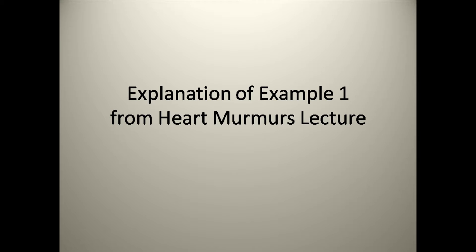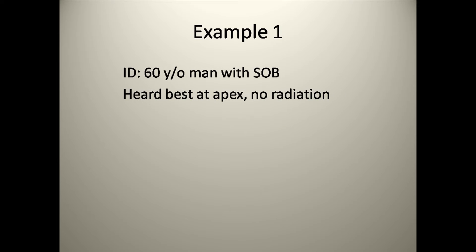Here's the example. It is from a 60-year-old man presenting with shortness of breath, and this murmur is best heard at the apex. To identify the most likely etiology of this murmur, the first step is to determine whether it's systolic or diastolic.